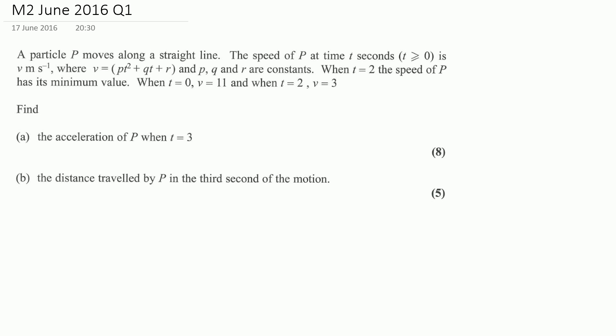The easiest one to start with is to evaluate v at t equals 0, which gives us 11. Substituting in t equals 0, we just end up with r, so r is equal to 11.